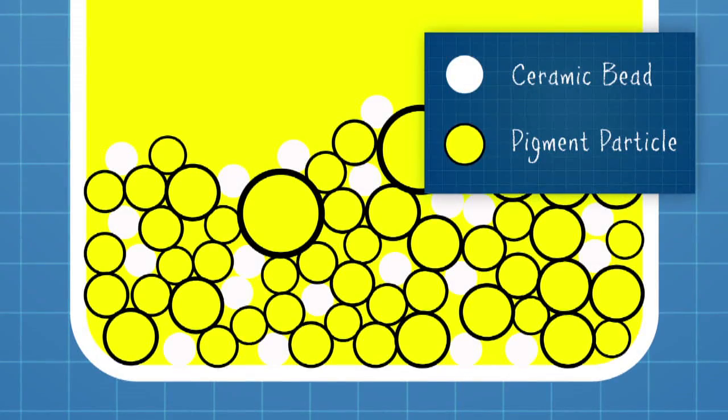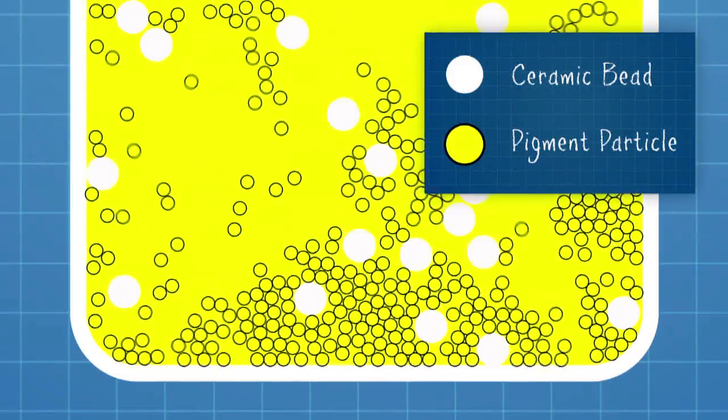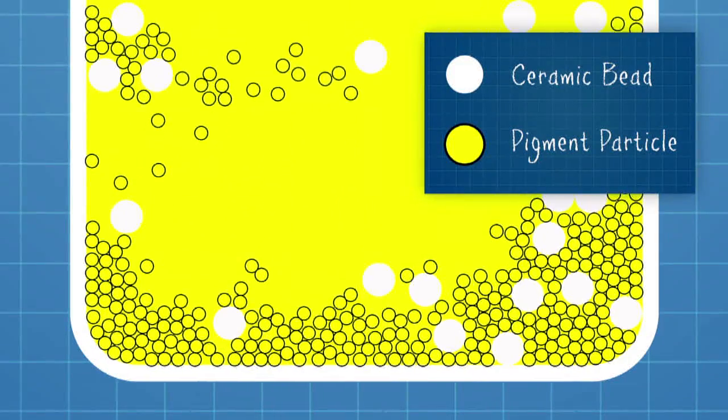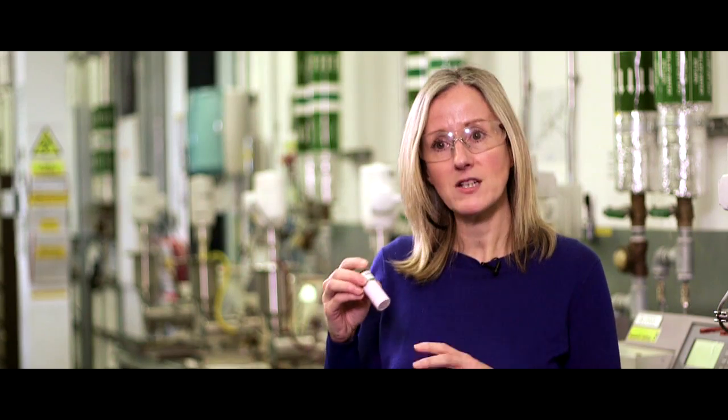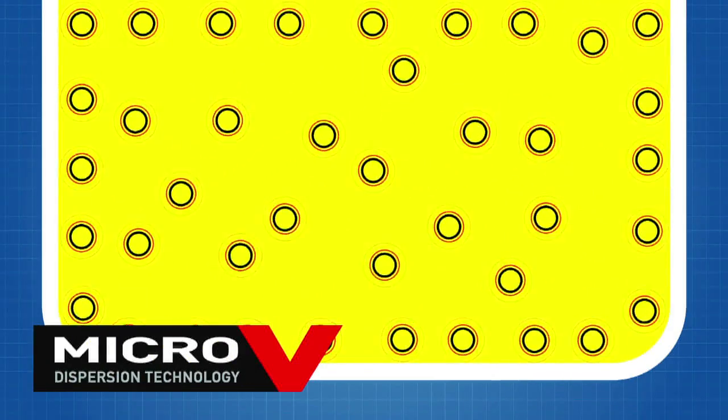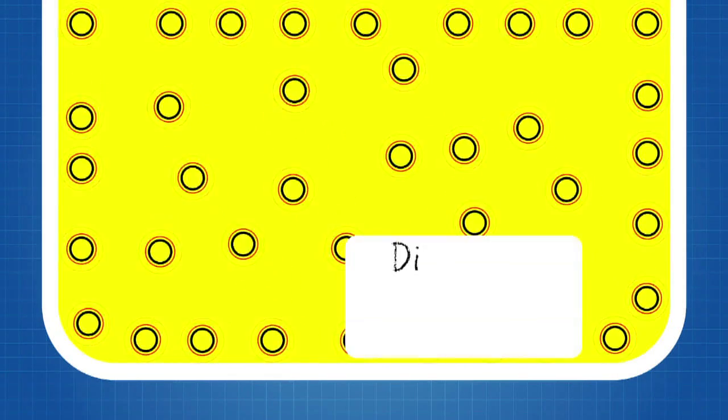The second critical technology is the process itself. We use what we call a bead milling process using very hard but very small ceramic beads that break down those pigment particles during the milling process.